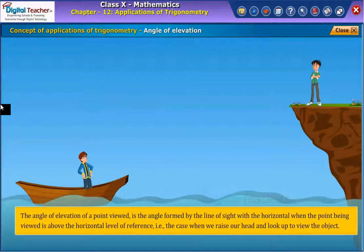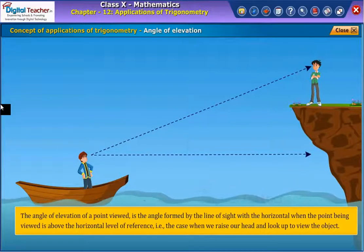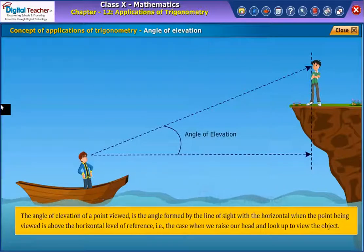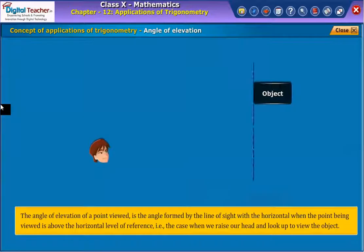For example, consider the situation where a boy Suresh is standing in a boat. He looks up to see his friend Ramesh standing on the edge of a nearby cliff. The formation of the angle of elevation is shown on screen. The line diagram of angle of elevation is as shown.